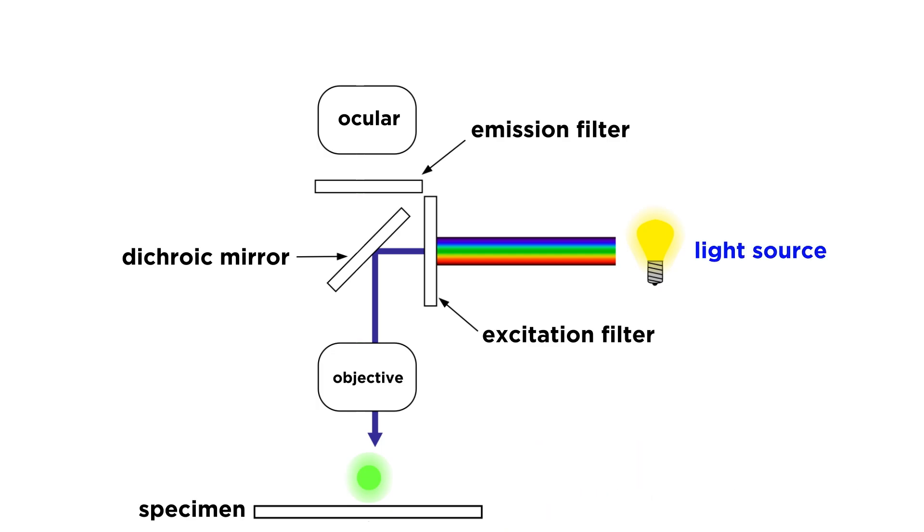Next, the laser emits a photon of light, which passes through an excitation filter that only allows photons of a certain wavelength to pass through. Dichroic mirrors then angle the photon beam through the objective lens that focuses the photon onto the sample. The photon reaches the sample, which in turn emits a photon of lesser energy.